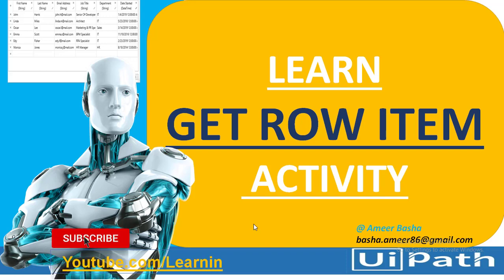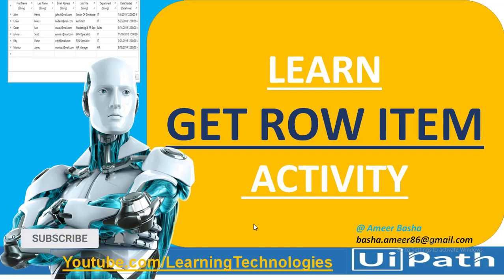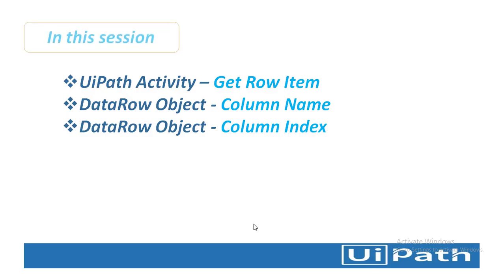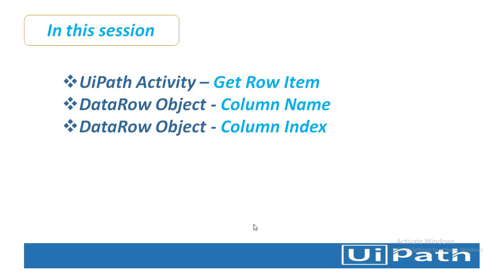Hello everyone. In this session we are going to learn about the Get Row Item activity using data tables. We'll see what is the purpose of Get Row Item activity. By using Get Row Item activity, we can get a value from a data row variable according to a specified value.